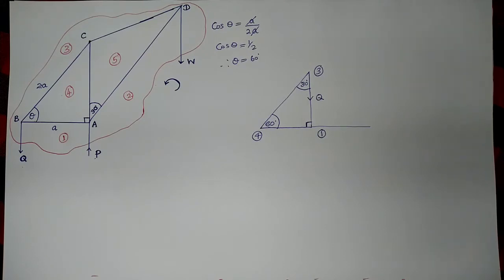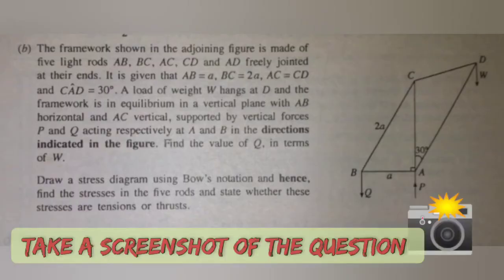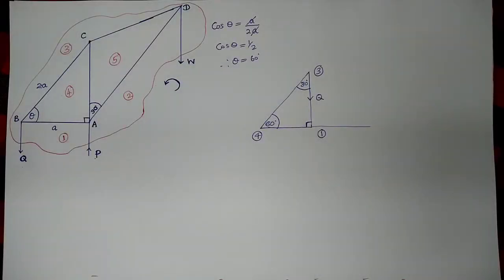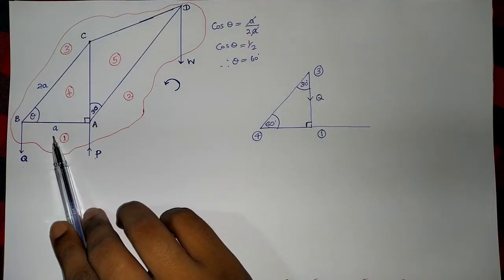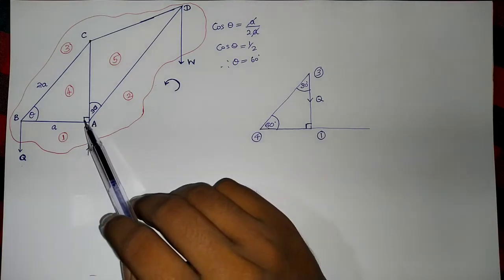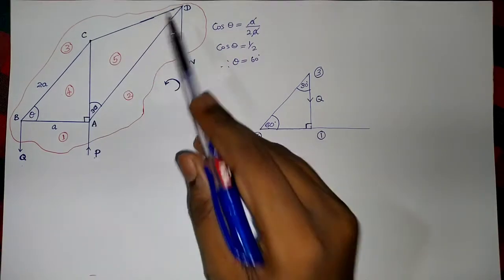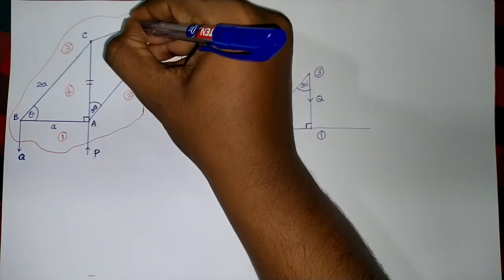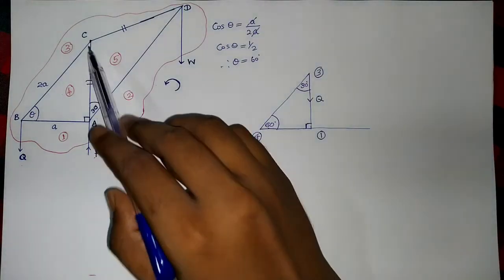Now let's read the problem from this past paper and try to solve it in order. The framework shown in the adjoining figure is made of five light rods AB, BC, AC, CD and AD, freely jointed at their ends. It is given that AB equals a, BC equals a, and AC equals CD.